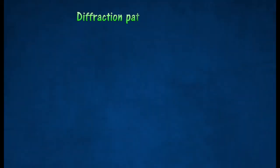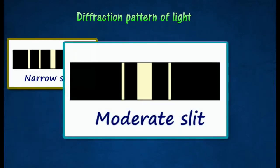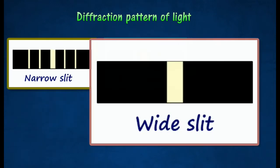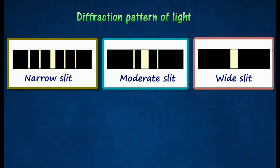The diagram shows the diffraction of light through different size of slits. Diffraction of light through a narrow slit produces bright and dark fringes on the screen.